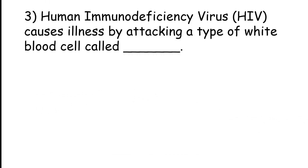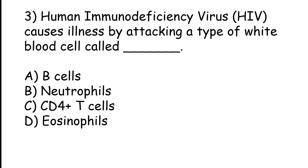Human Immunodeficiency Virus HIV causes illness by attacking a type of white blood cell called B cells, Neutrophils, CD4 plus T cells, Eosinophils. The correct answer is option C, CD4 plus T cells.